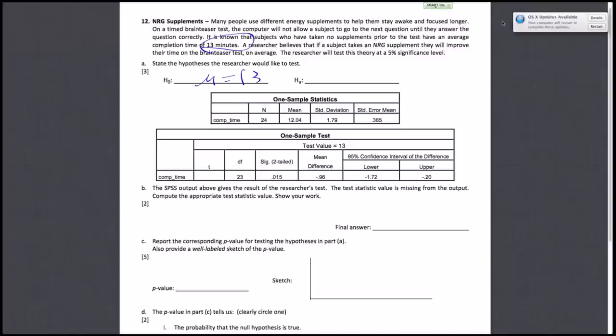Next we find the alternative hypothesis. The question states that the researcher believes the energy supplement will improve performance on the brain teaser test. If you improve your time, your completion time would be smaller than 13. So we test the hypothesis that mu, the completion time, is less than 13, which would imply the supplement improves cognitive abilities. That's part A.